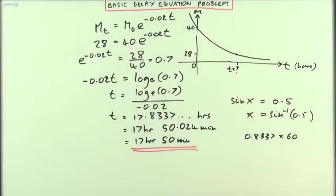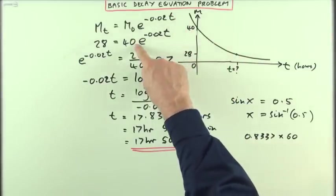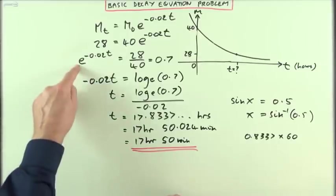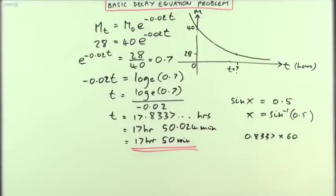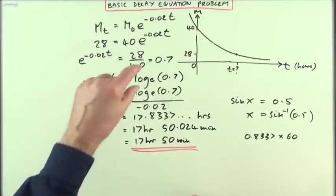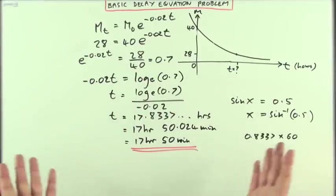That's the way you would solve that particular problem, to find how long it would take for this material to decay from 40 down to 28. It's actually really straightforward. The only important part is this part here: how do you get rid of the exponential. The inverse of exponential is log, just like the inverse of sine is inverse sine. If you want to move the exponential, apply the logarithm to the other side.